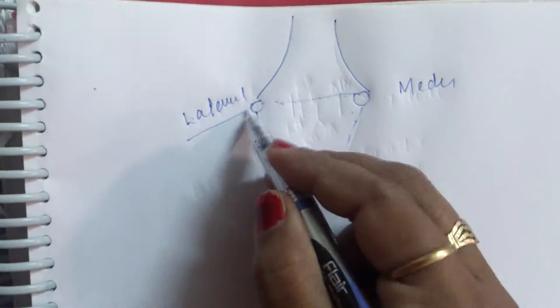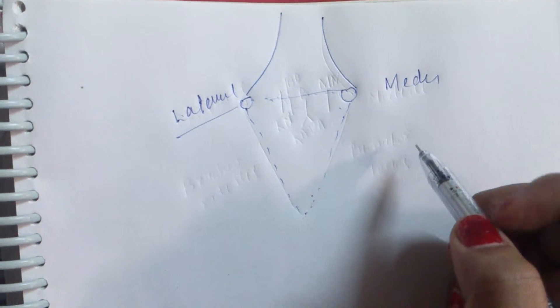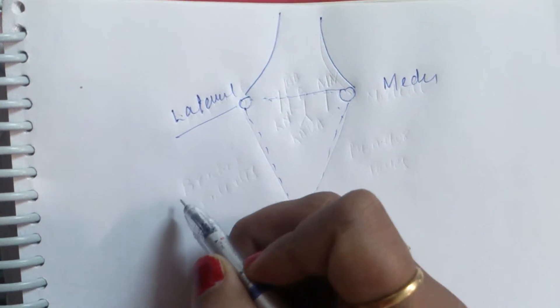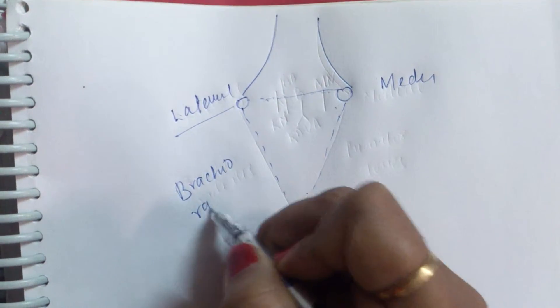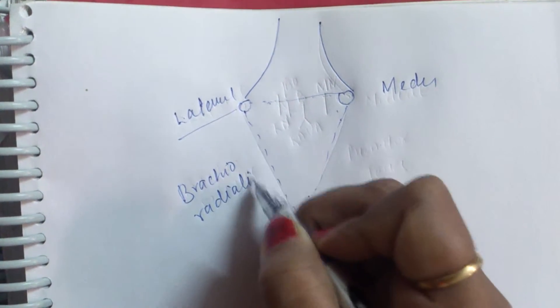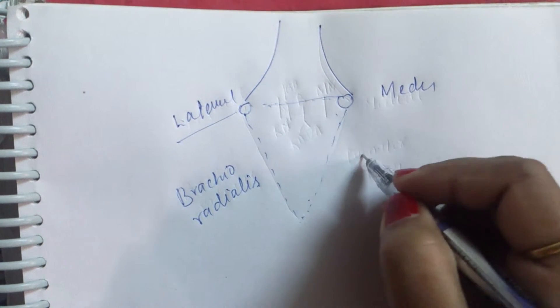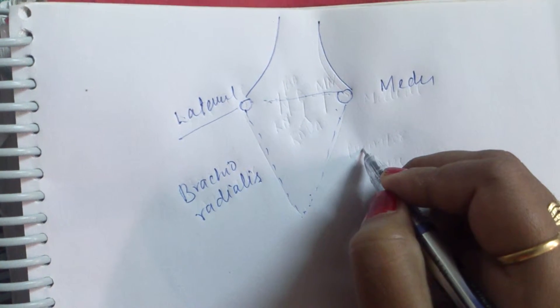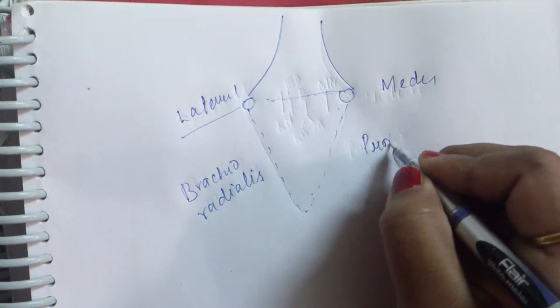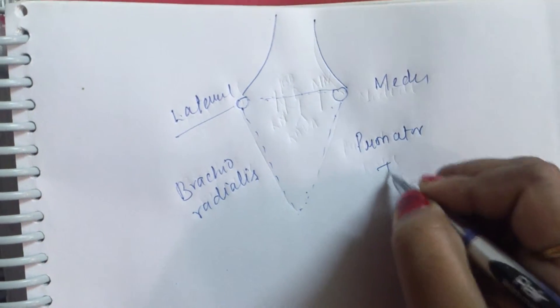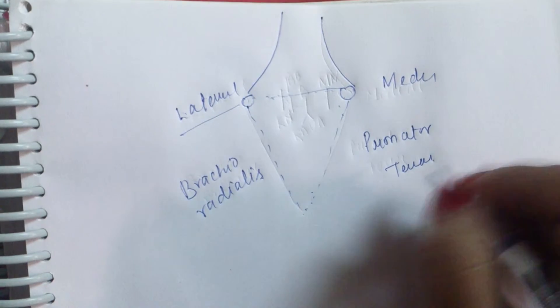The lateral boundaries of the cubital fossa or the medial border is by the brachioradialis muscle. And the medial boundaries of the cubital fossa or the lateral border is by the pronator teres muscle.